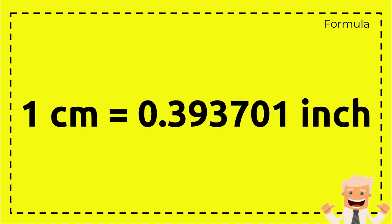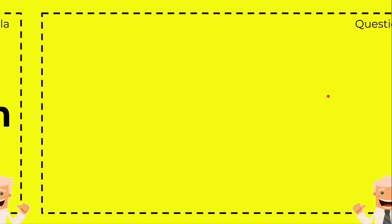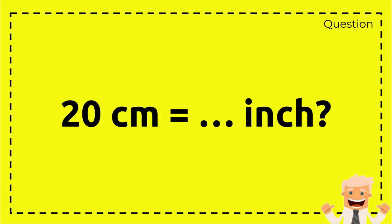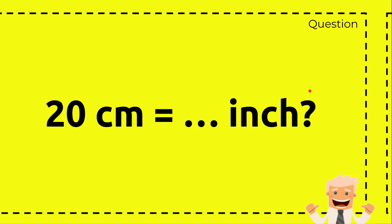First you need to know the formula: 1 centimeter equals 0.393701 inch. And then let's write the question: 20 centimeters equals how many inches? That's the question we will answer.